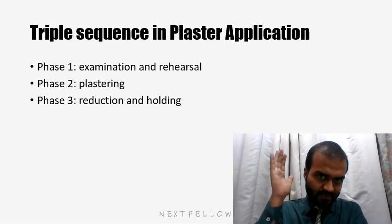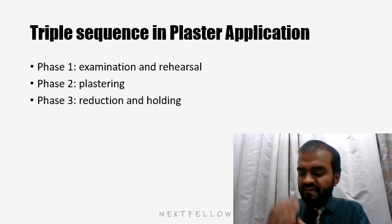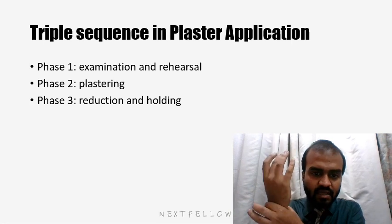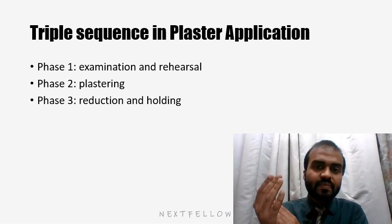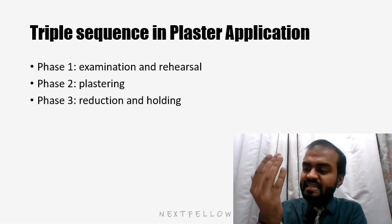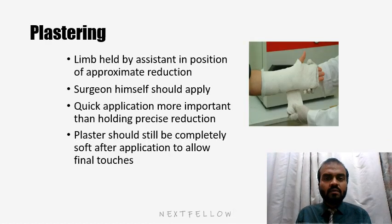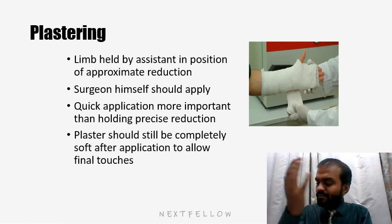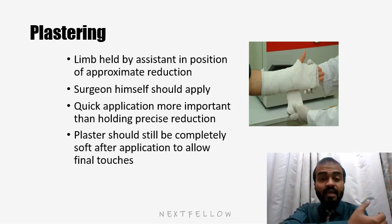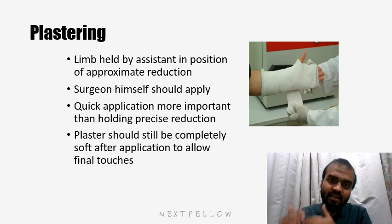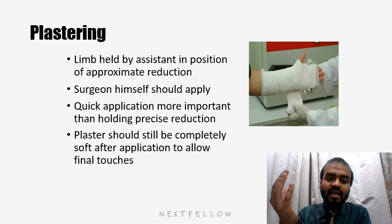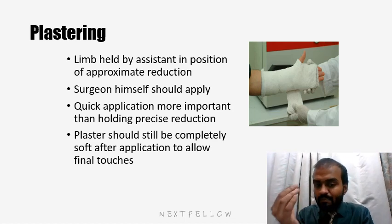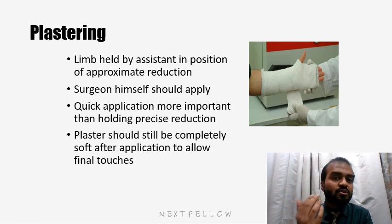While applying any plaster, we need to remember the triple sequence. Phase 1 is the examination and the rehearsal. Phase 2 is the normal plastering, which includes cotton wool or padding application with the plaster bandage. Phase 3 is the reduction and the holding of the cast. The limb should be held by the assistant in the position of approximate reduction. The surgeon should himself apply the padding and also the plaster bandage. Quick application of the plaster bandage is important so that precise holding of the reduction is maintained, and plastering should be done completely while it is soft.